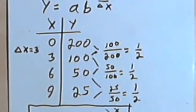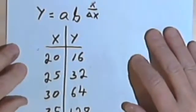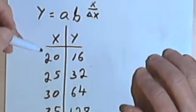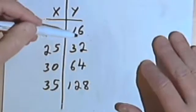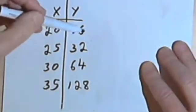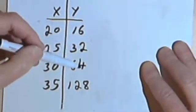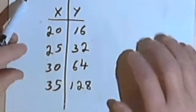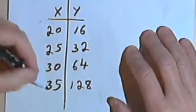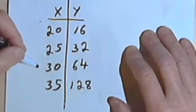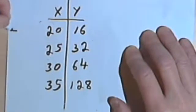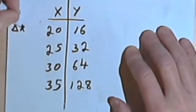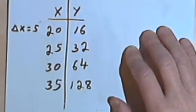Okay, one more point I want to make. Here I've got a table of values again, 20, 25, 30, 35, and that was my input column. My output column is 16, 32, 64, 128. So let's look at this. 20, 25, 30, 35, I'm counting by 5s. So I'm changing, my change in x is 5, so delta x equals 5.